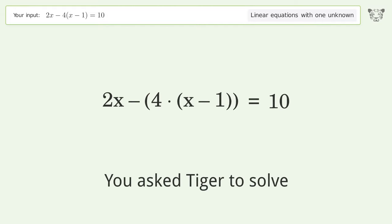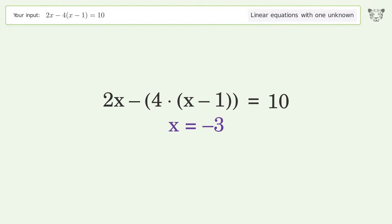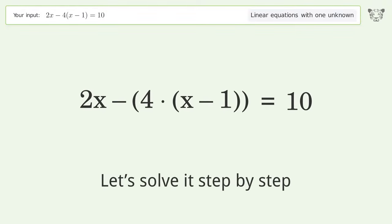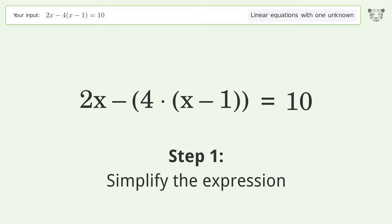You asked Tiger to solve this. This deals with linear equations with one unknown. The final result is x equals negative 3. Let's solve it step by step. Simplify the expression.